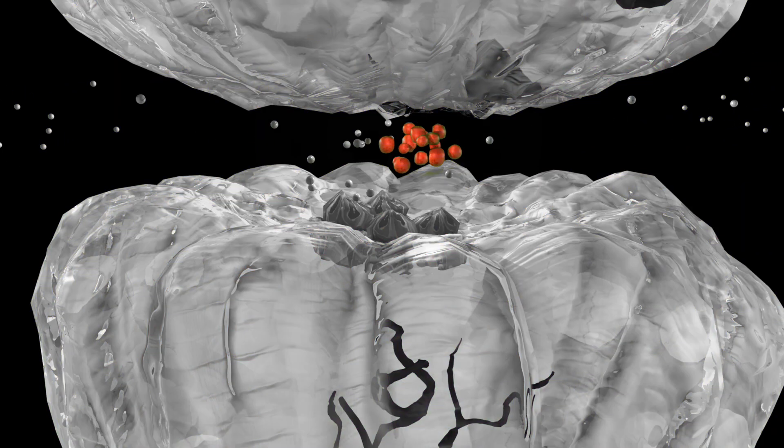This is glutamate. It is the excitatory neurotransmitter of the nervous system. That means it is used to transmit the electrical signal throughout the nervous system.